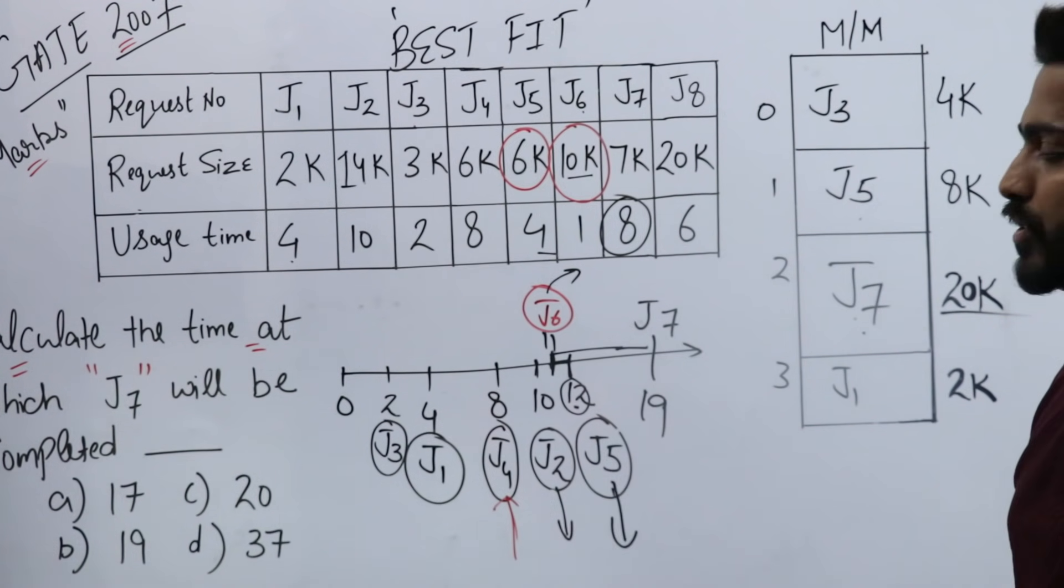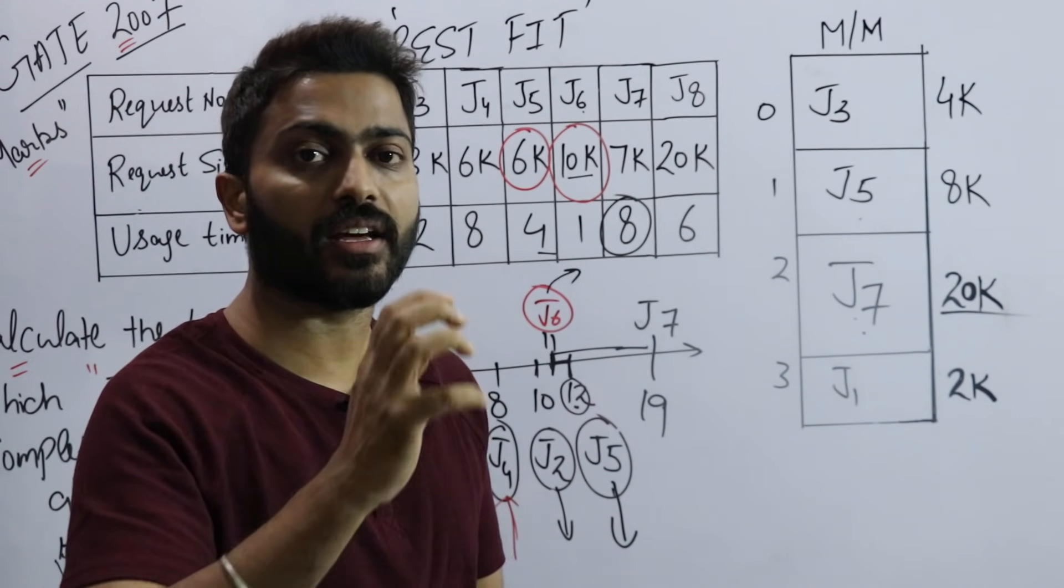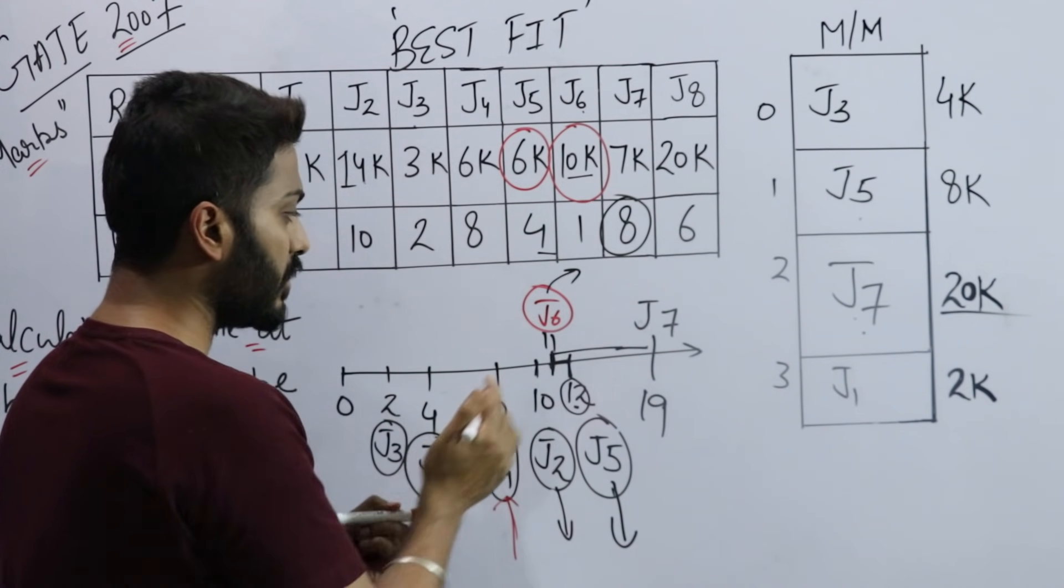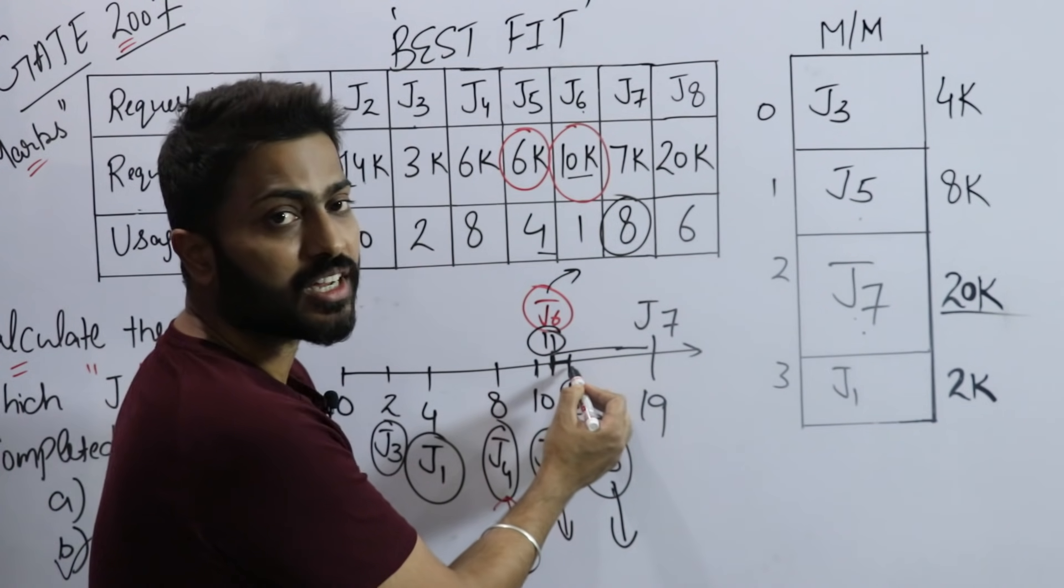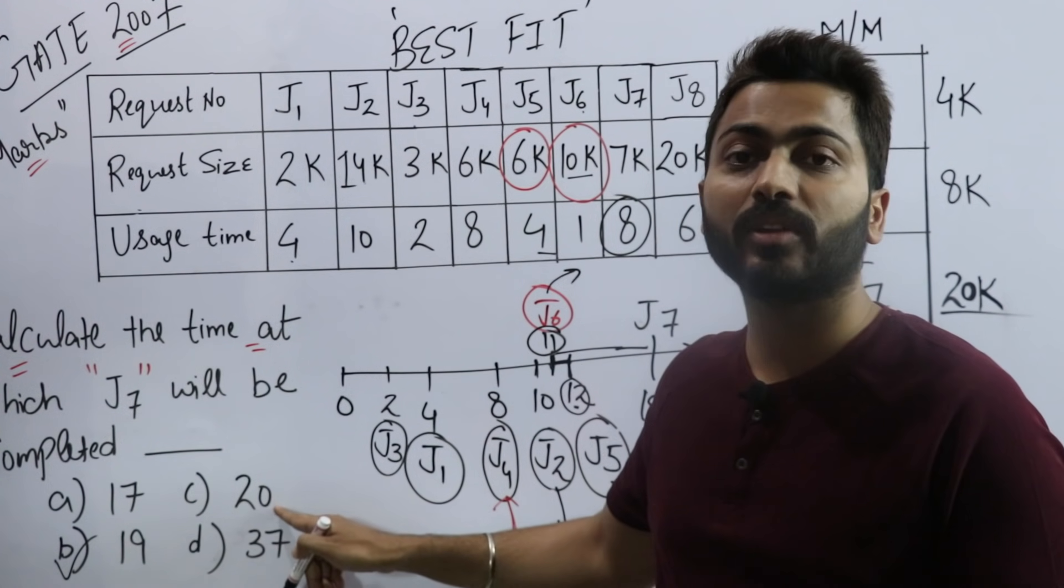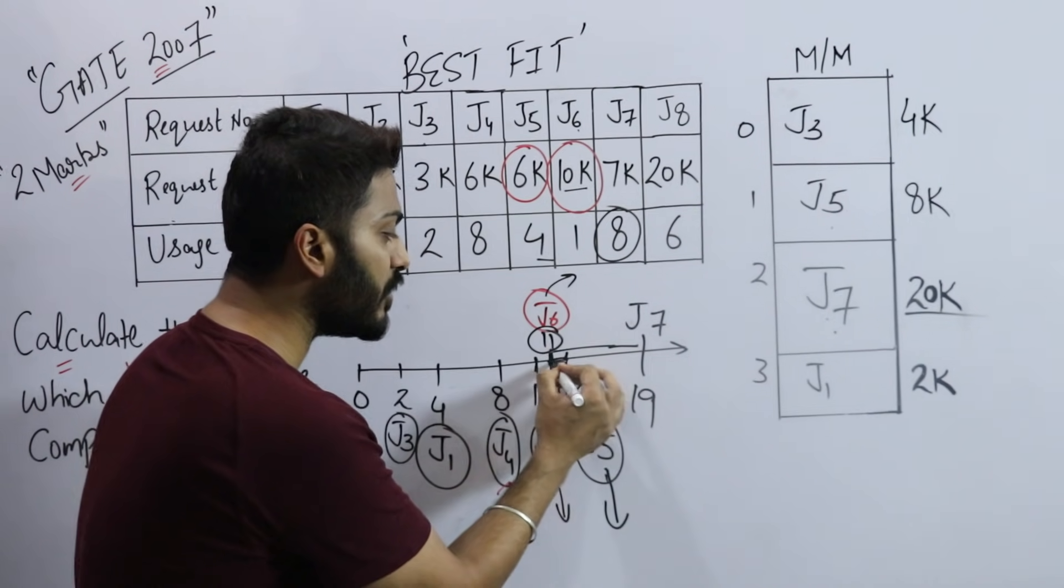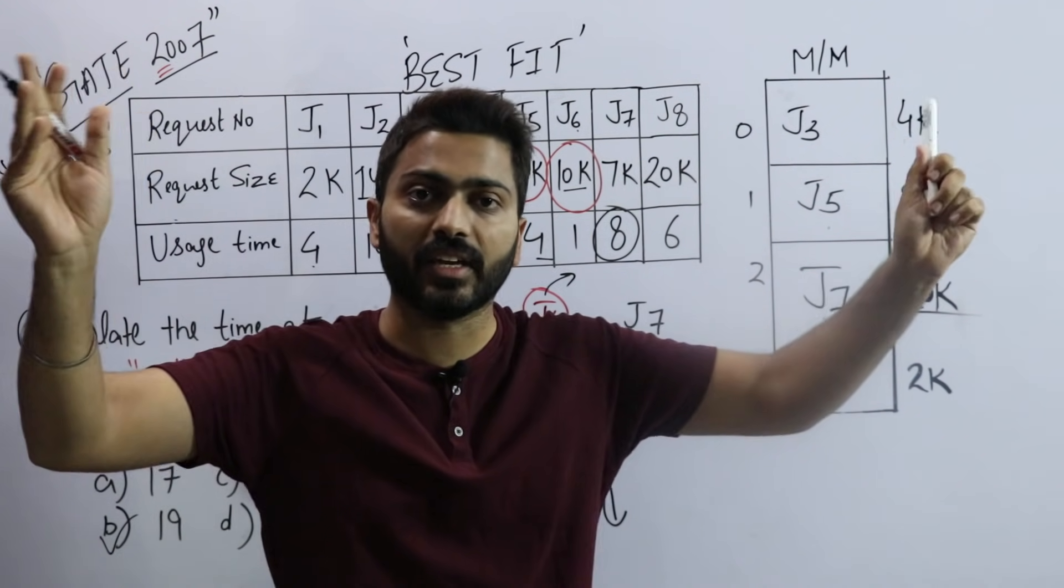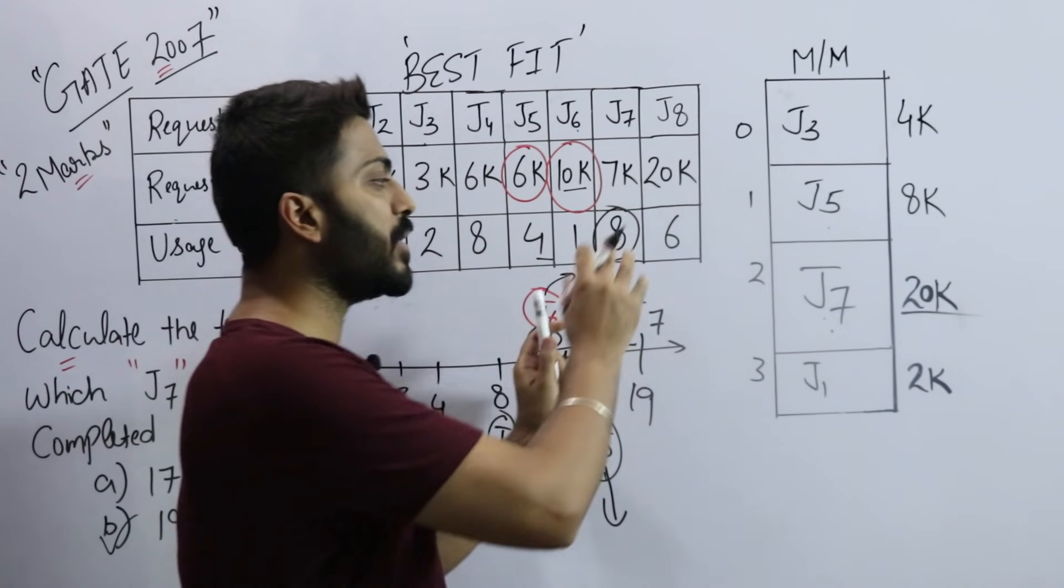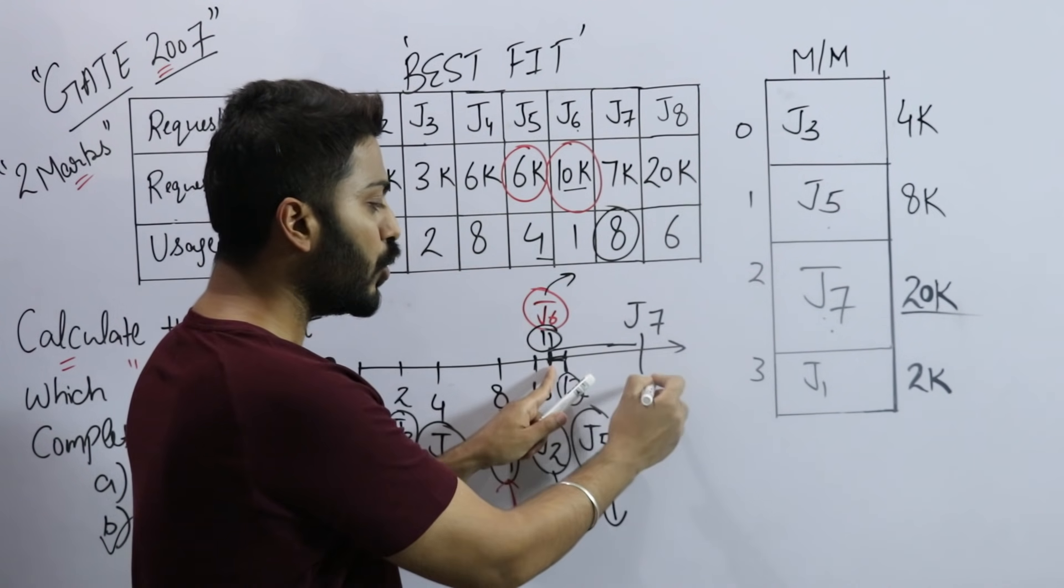So J7 will stay in memory until time 19. The question asks when J7 will be completed - it will complete at time 19. So the answer is B. If they asked the time at which J7 will enter into the RAM, that would be 11. Don't mistakenly do 12 - if you add 12 plus 8, you get 20. There's an option for 20, and I bet more than 90% of students will mark that option.